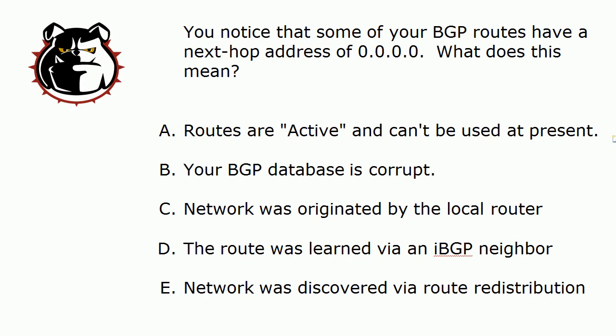Let's go ahead and hit today's question. You notice that some of your BGP routes have a Next Hop Address of all zeros. That's not exactly something we see a lot with RIP, EIGRP, or OSPF. What does this mean?